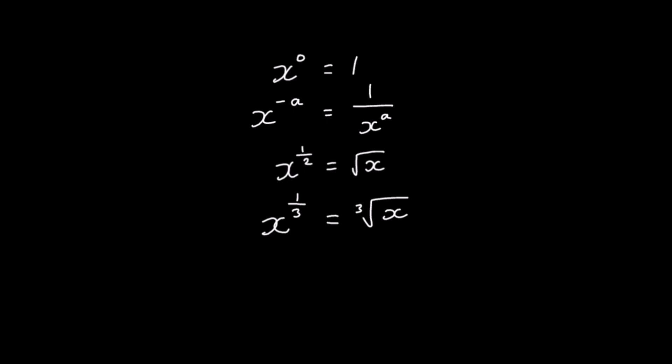Now we're going to look at another set of rules for indices. The first one: anything to the power of zero is one. Then a negative power means one over, or it means flip it over. A power of a half is the same as the square root, and a power of a third is the same as the cube root. I'm going to go over them one by one.